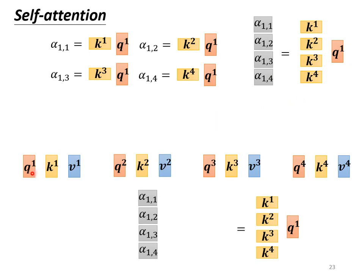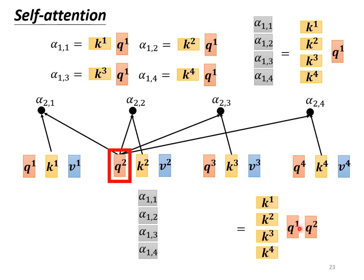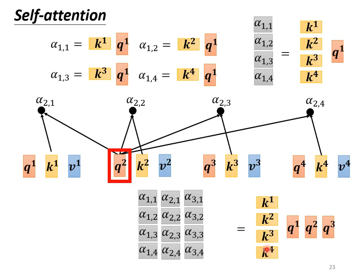We also need to consider q2 with k1 to k4, and similarly q3 and q4. So we multiply q2 by k1 to k4 to get α2,1 to α2,4, and do the same for q3 and q4. All these attention scores can be computed as the multiplication of two matrices: the transpose of matrix K multiplied by matrix Q, giving us attention matrix A.